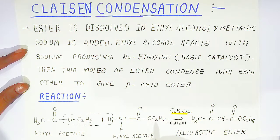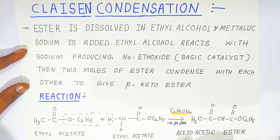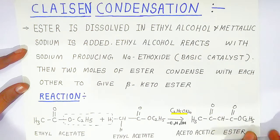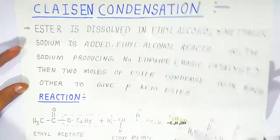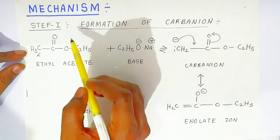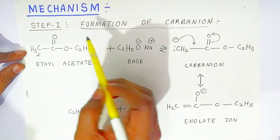This is the formula of acetoacetic ester, and this is called Claisen condensation. Two ester molecules are condensed and they give a beta-keto ester. When the two ethyl acetate molecules condense, they give acetoacetic ester. This is a very important condensation reaction.